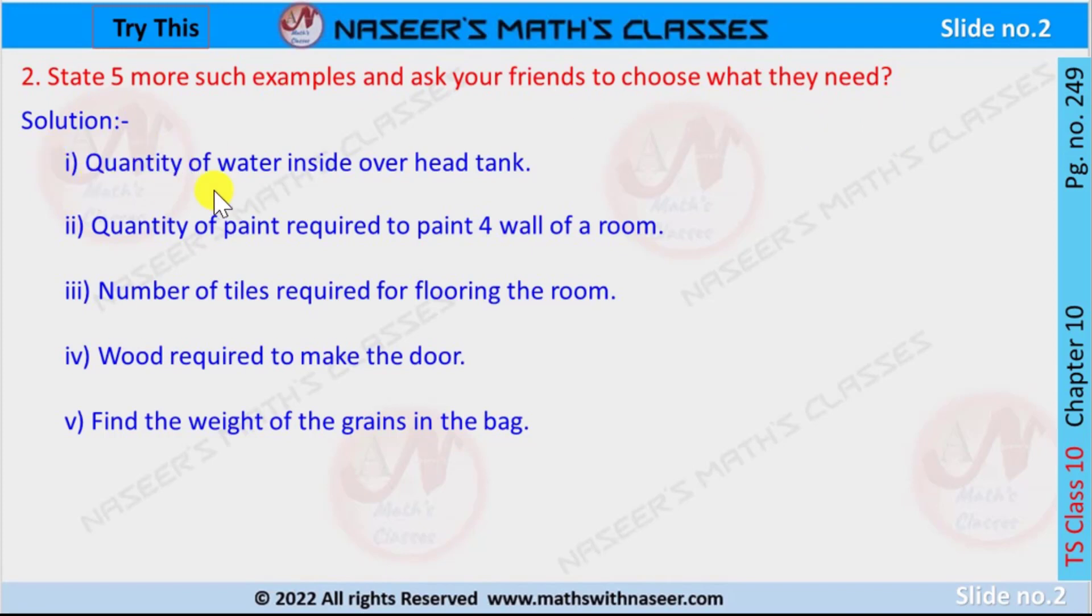First question: quantity of water inside overhead tank. Second: quantity of paint required to paint four walls of a room. Third: number of tiles required for flooring the room. Fourth: wood required to make the door. Fifth: find the weight of the grains in the bag.